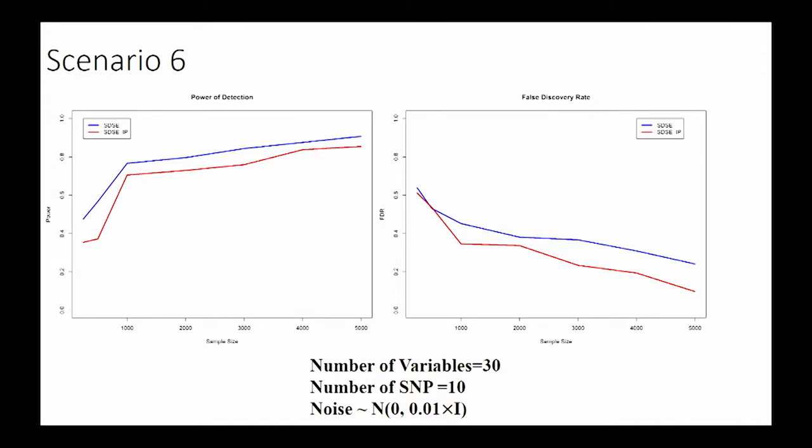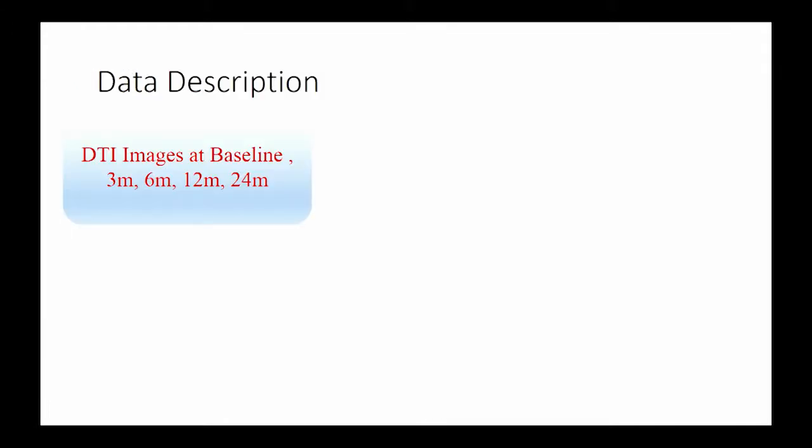Now we have a model whose performance is reasonably well, and we try to apply the model to study some real-world problems. This is the data we get. We get diffusion tensor imaging data at five different time points: baseline, three months, six months, 12 months, and 24 months.